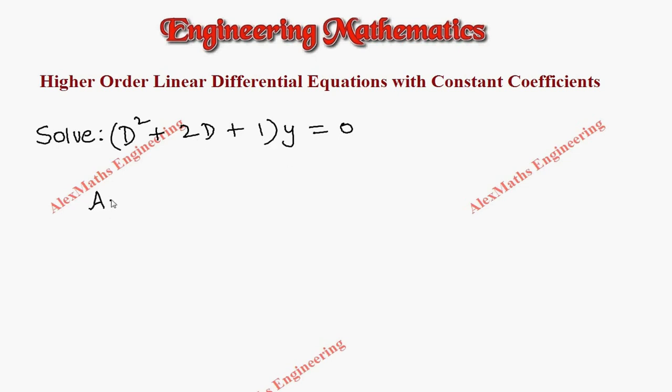The first step, we have to write the auxiliary equation, where we write capital Ds as small m, so m square plus 2m plus 1 equal to 0.